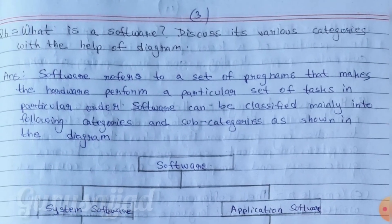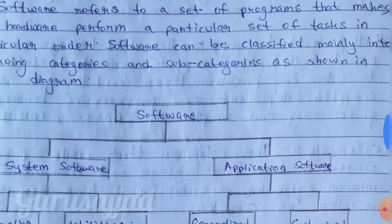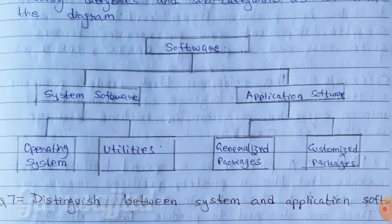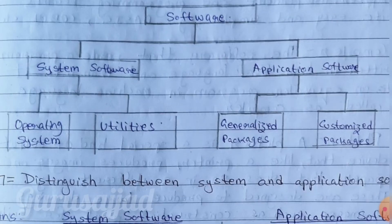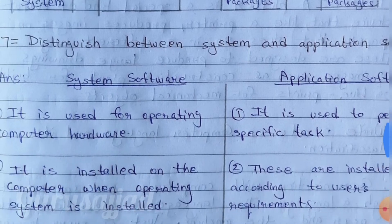Question number 6: What is software? Discuss its various categories with the help of a diagram. Answer: Software refers to a set of programs that makes the hardware perform a particular set of tasks in a particular order — unlike hardware, we cannot touch software. Software can be classified mainly into two categories: system software and application software. Each of these is further divided into two parts, as shown in the diagram.